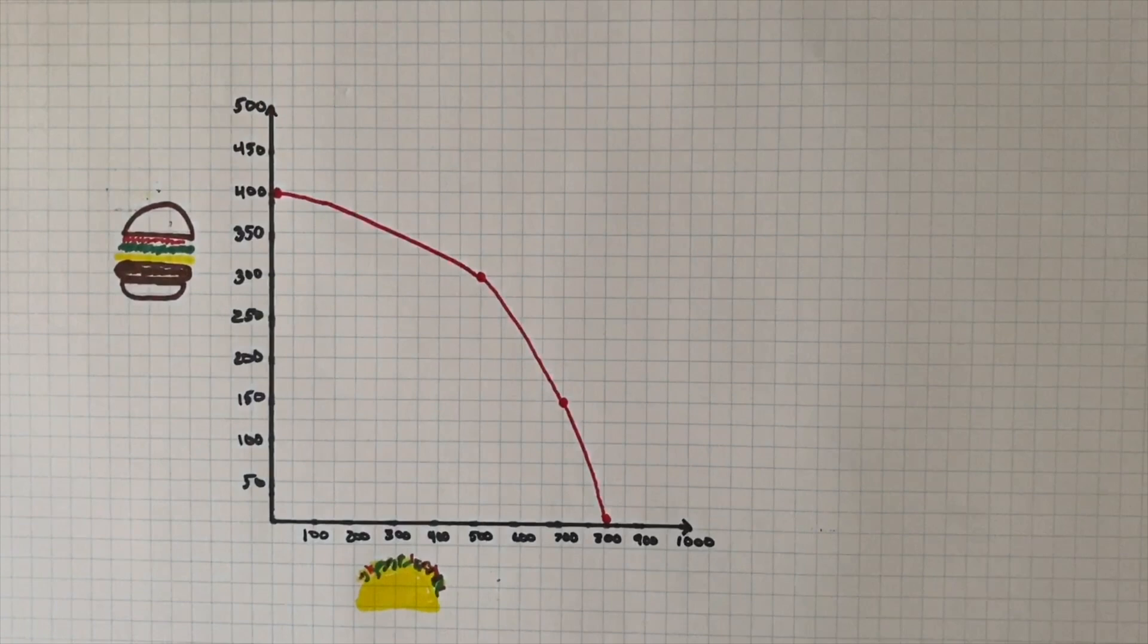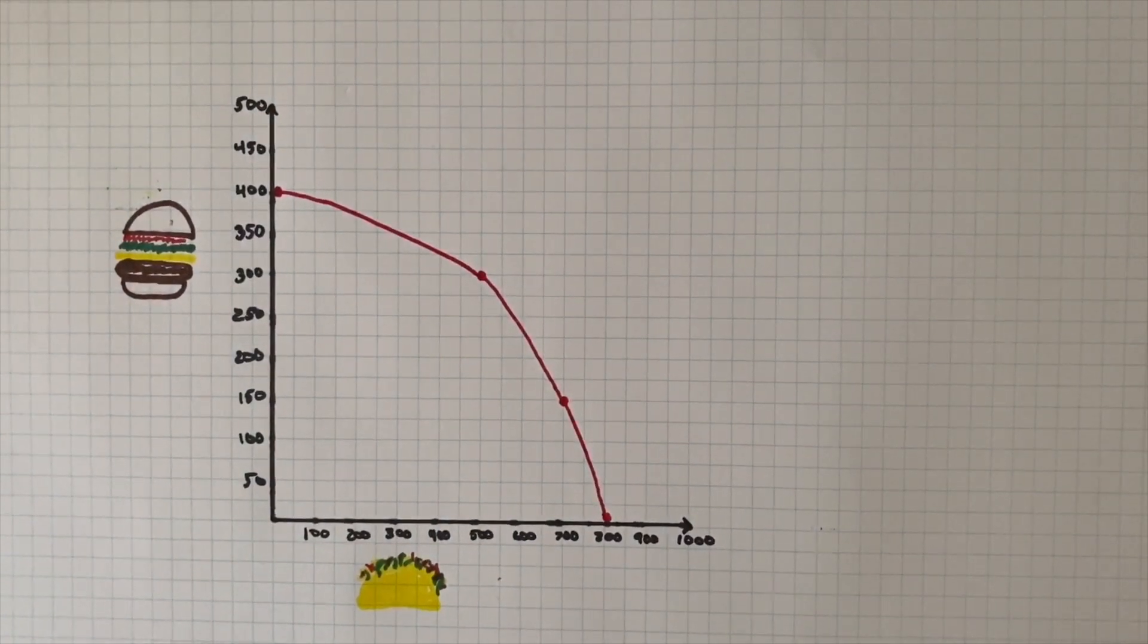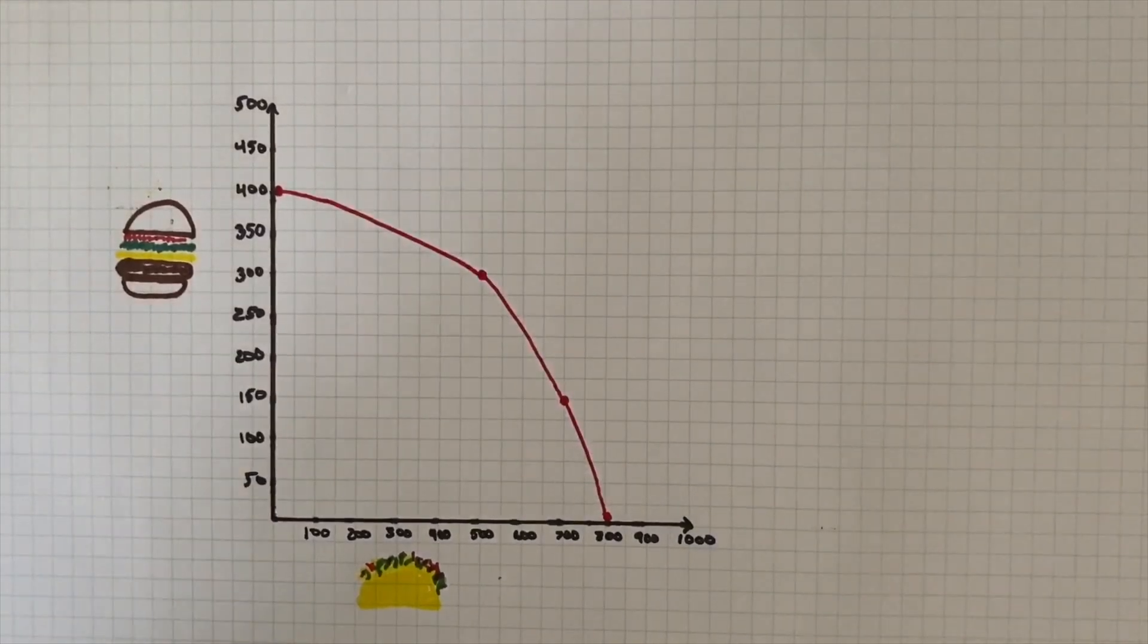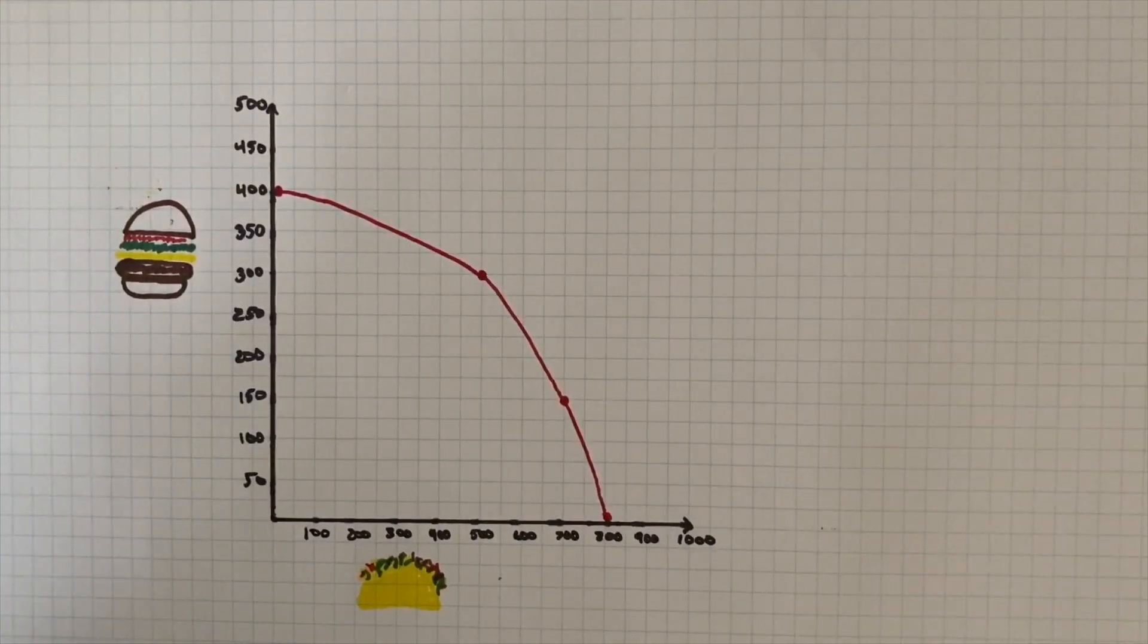Now in this case, given the limited information we have here, we can't prioritize one good over the other. So we can't say that oh, we want more tacos because of the number you can produce or more hamburgers because of this. It's all opinion at that point. We can only go off of the information we have. All points along the red line are considered efficient resource allocation because we are creating as many products as we possibly can. This again is visualizing scarcity for us.